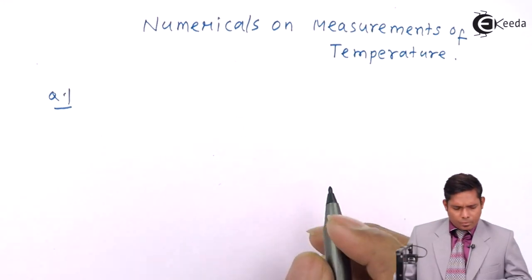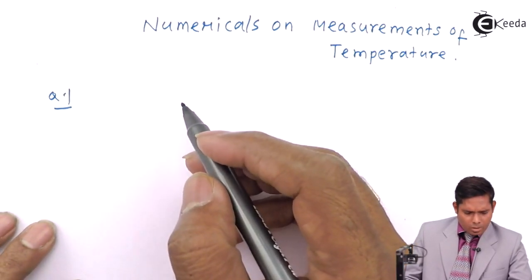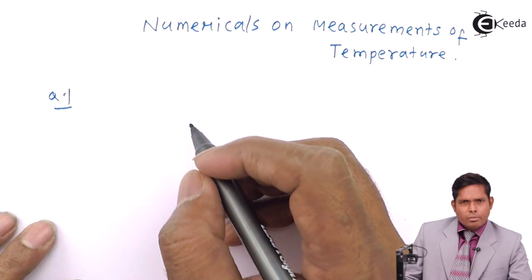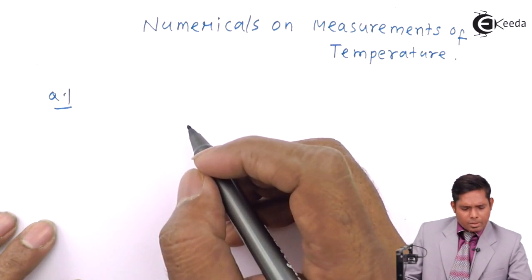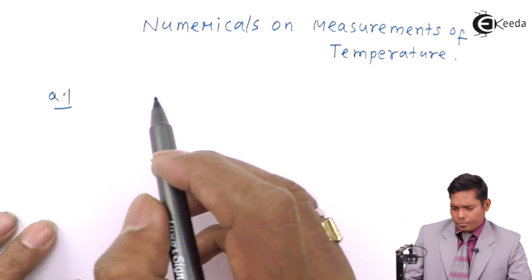For example, if the temperature of a room is 20 degrees centigrade, what is its temperature in degree Fahrenheit?